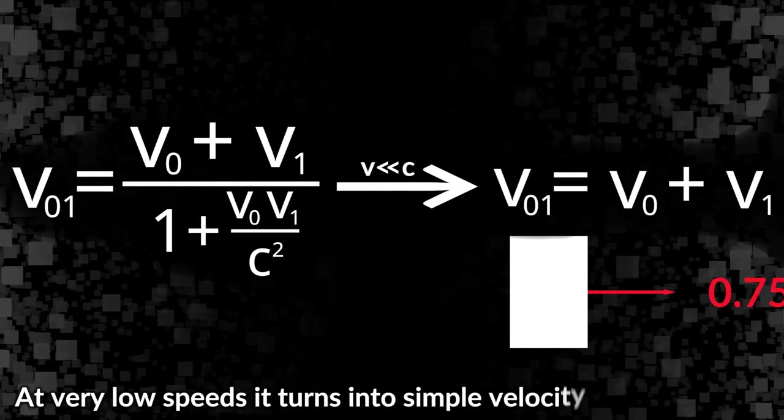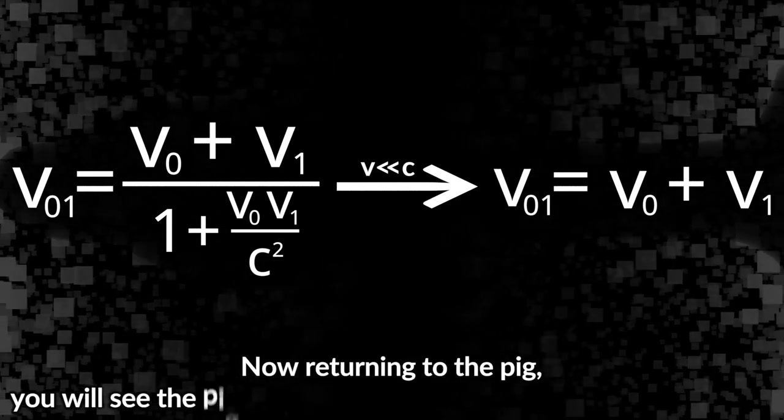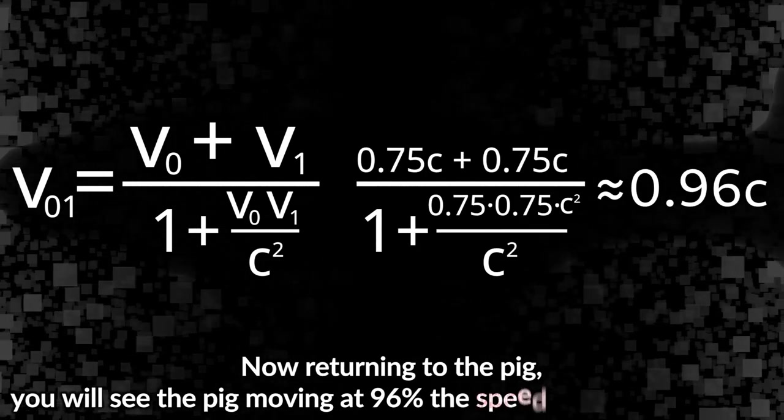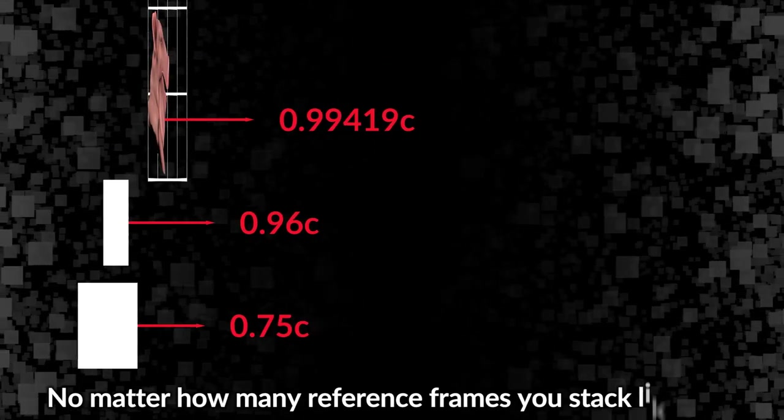At very low speeds it turns into simple velocity addition with minor error. Now returning to the pig, you will see the pig moving at 96% the speed of light, not at 150%. No matter how many reference frames you stack like this, nothing will ever go faster than the speed of light.